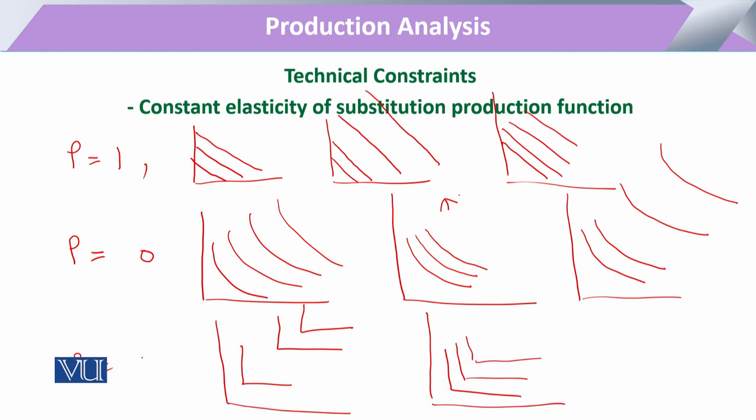The CES — Constant Elasticity of Substitution — function not only provides all shapes of the production function explained in one form, depending on its various rates of substitution, elasticity of substitution, and production elasticity of its inputs, but it can also exhibit all three rates of returns to scale.